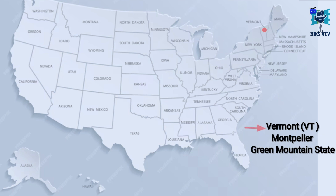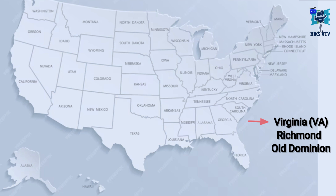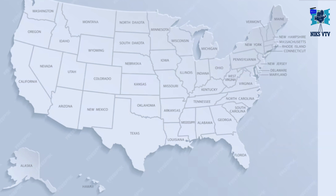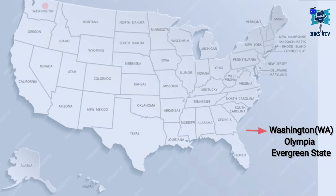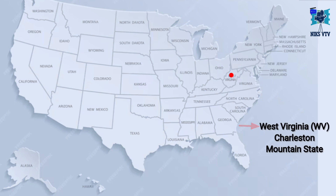Next state is Vermont, VT is its abbreviation, its capital is Montpelier, its time zone is EST, and its nickname is Green Mountain State. Next state is Virginia, VA is its abbreviation, capital is Richmond, its time zone is EST, and its nickname is Old Dominion. Next state is Washington, WA is its abbreviation, its capital is Olympia, its time zone is PST, and its nickname is Evergreen State.